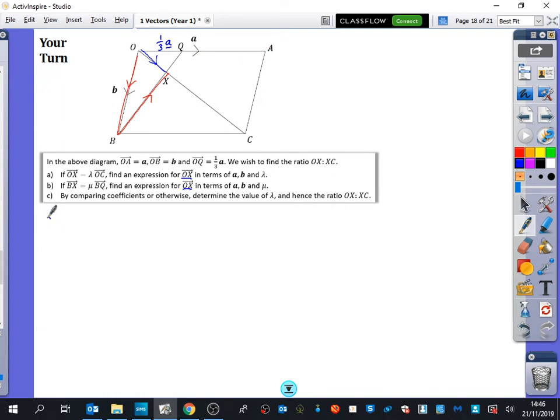Part A of the question, which is the blue journey, says that OX is some fraction of OC. So lambda here is between zero and one. We're trying to say how far along that line does it actually go. But if I want to find out what it is of OC, I better find out what OC actually is. And OC is A plus B.